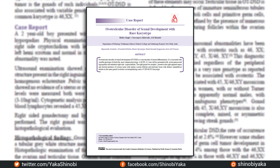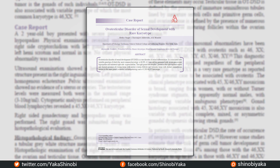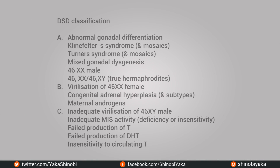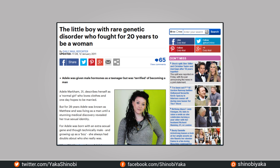There are three clinical classifications of DSD. Category A is primarily dealing with genetic anomalies, like Klinefelter syndrome and Turner syndrome. Category B is virilisation issues. And Category C is inadequate production of particular hormones, which leads to under-masculinisation or under-feminisation of the fetus. There is an interesting Daily Mail article that relates to Klinefelter syndrome — I include a link in the description box below.